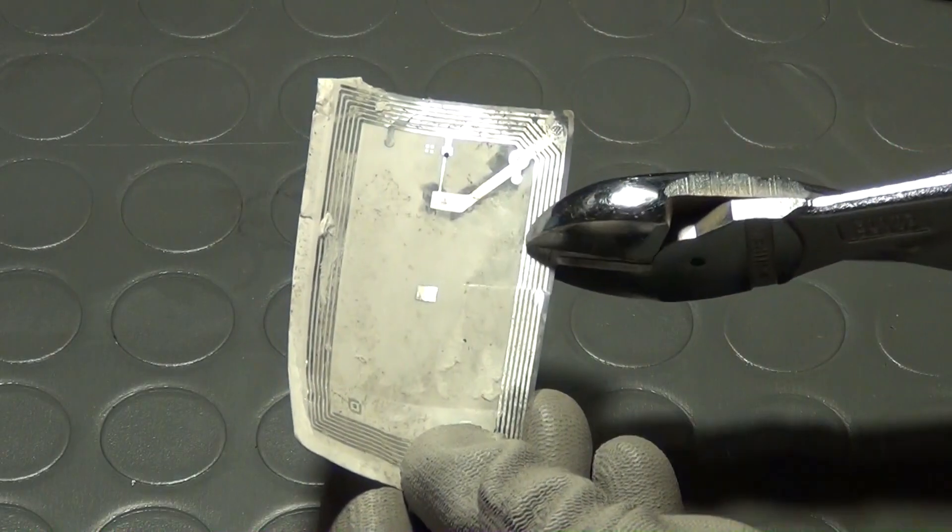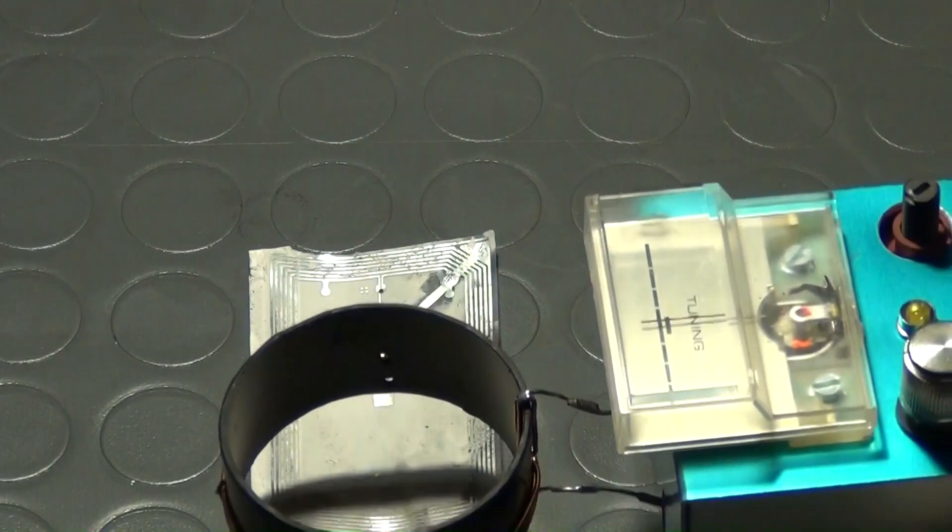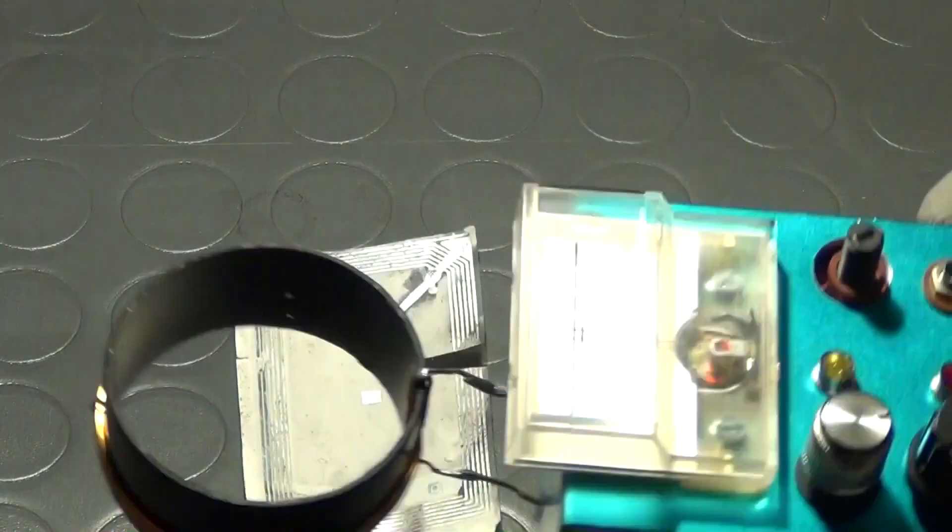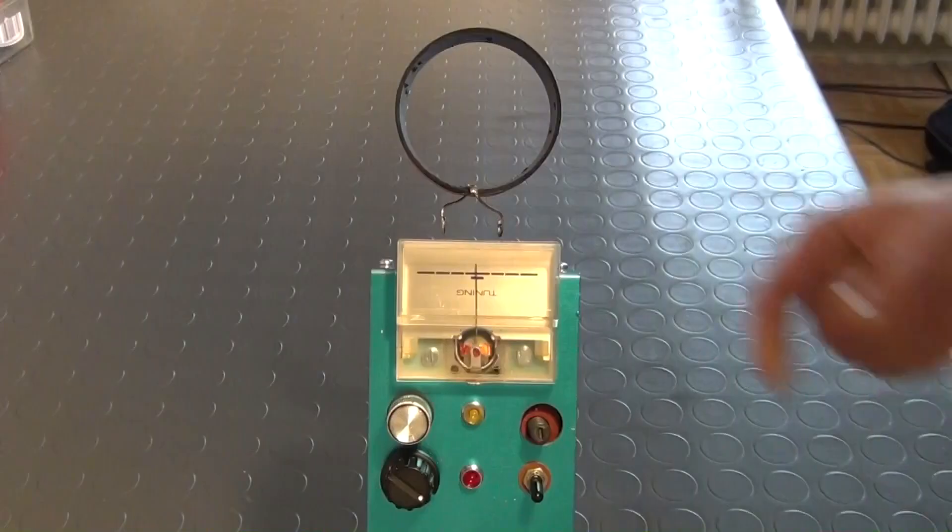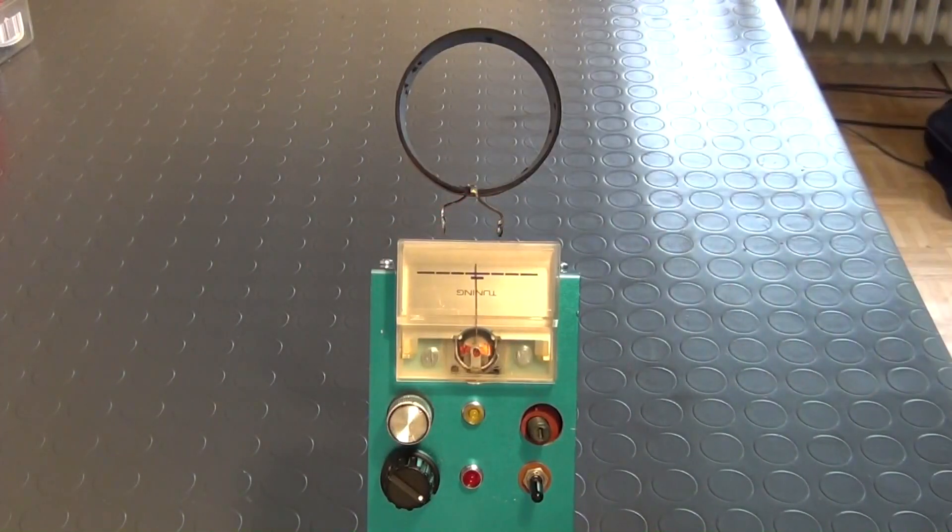If an RFID Tag is destroyed, like I do here with this side cutter, the detector is no longer giving a reading, proving that the tag is now completely dysfunctional. If it is brought near a metal object or touched with your hand, it gives, if calibrated right, a negative reading.